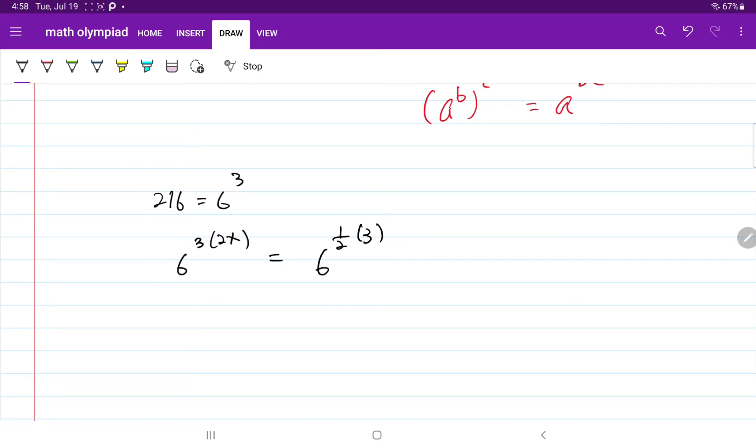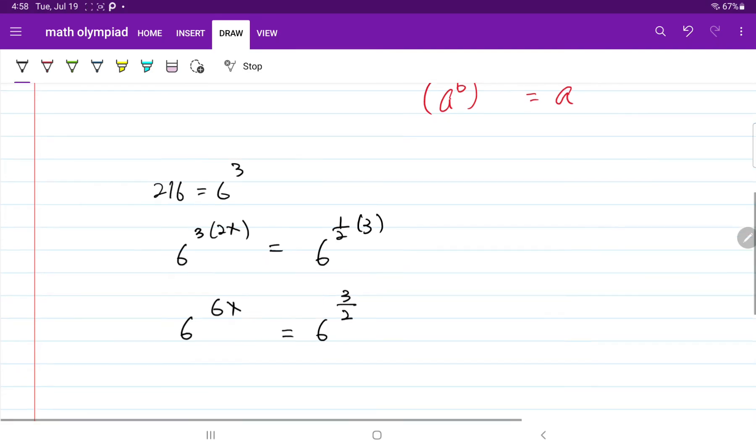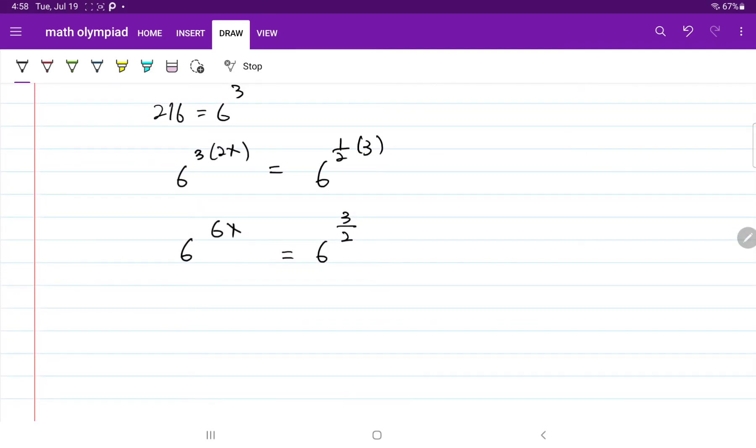When we compare both sides, I have 6 to the power of 6x is equal to 6 to the power of 3 over 2. Let's equate the two terms. I have 6x is equal to 3 over 2.